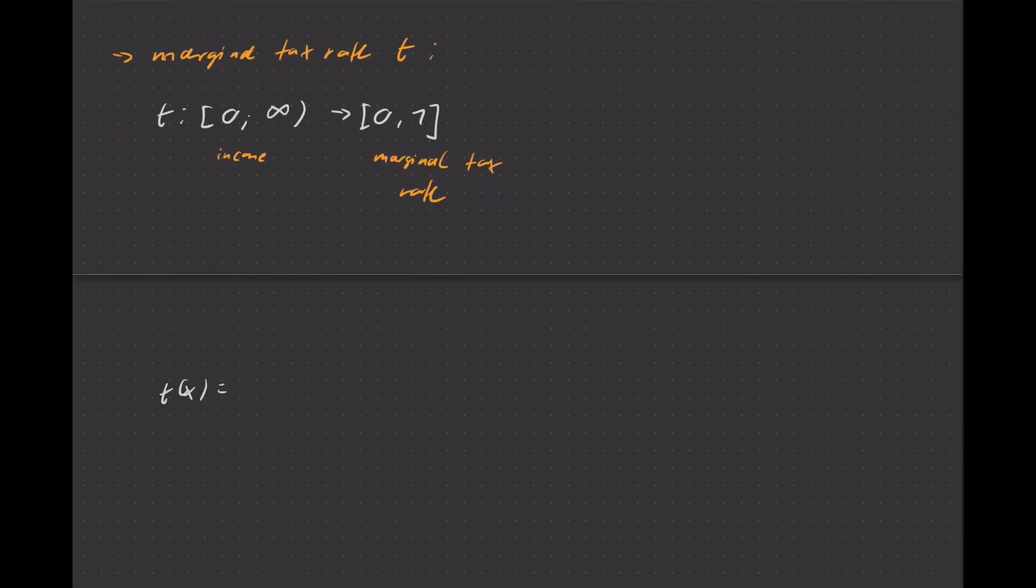This function t(x) has to be defined in the following way: t of x is 0 for x between 0 and 20. We get 0.1 plus x over 200 for incomes between 20 and 80. And we get 50% for incomes higher than 80. So this is the piecewise definition of our marginal tax rate.